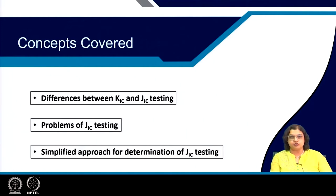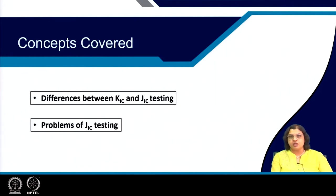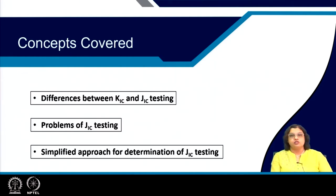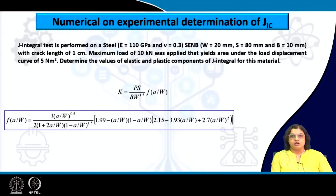Before we begin with the differences, similarities, and analogy between K1c and J1c, let us continue from where we left in the last lecture. We were talking about J integral and J1c, which is the summation of the elastic and the plastic components. Let us solve a simple numerical to make this idea a little bit more clear.